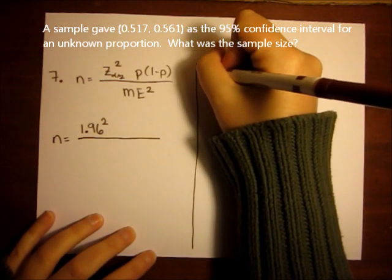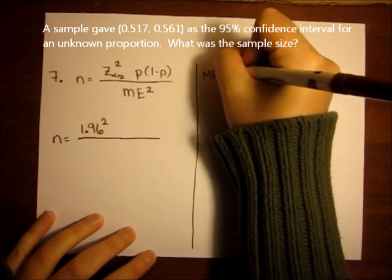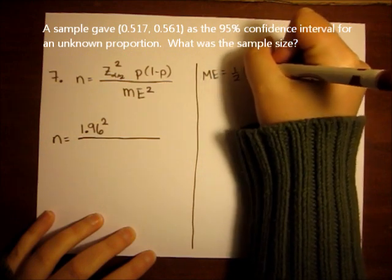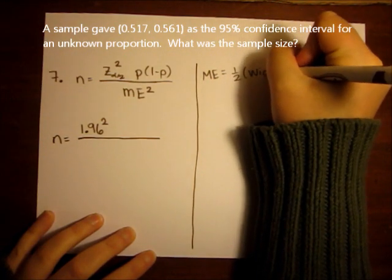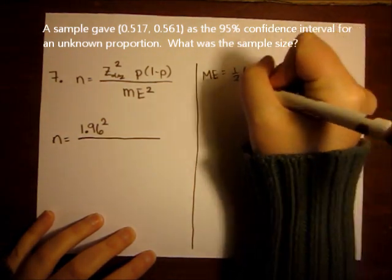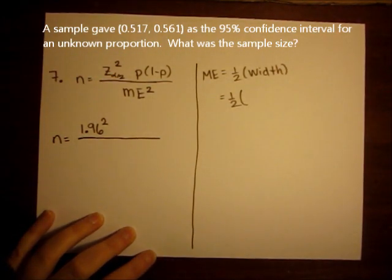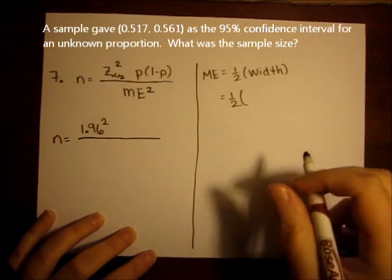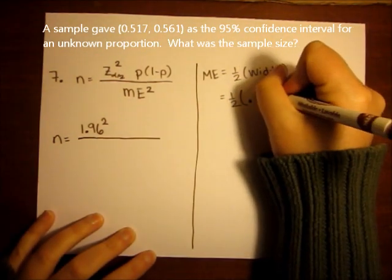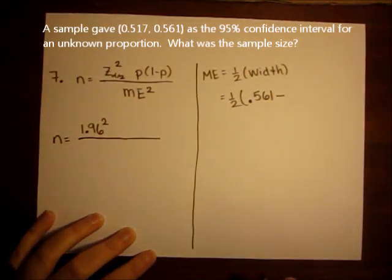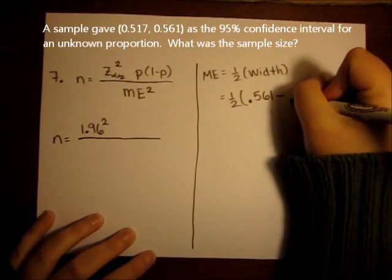I know that the margin of error is one half of the width of the interval, and the width is always the larger number minus the smaller number. So the larger number is 0.561, and the smaller number is 0.517.